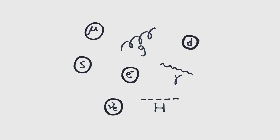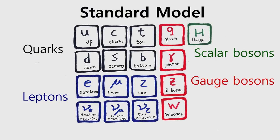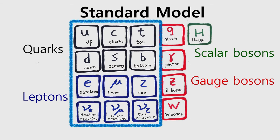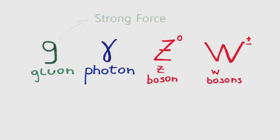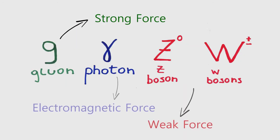And some decades ago, theoreticians came up with something to try to explain all this, the standard model. Now, besides quarks and leptons, that are the matter particles, we also have the gauge bosons, that are the mediators of the strong, weak and electromagnetic forces.